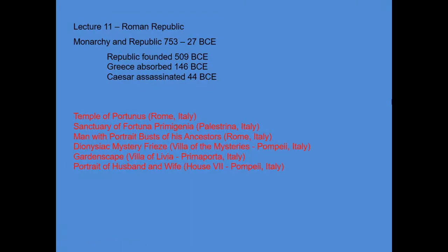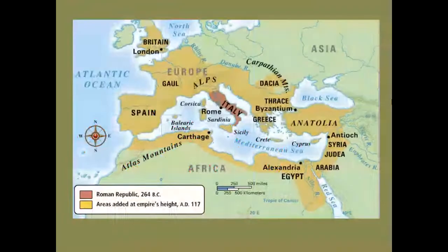Hello everybody, welcome to the first lecture in our third unit. We're starting off with the Roman Republic — the early days of the history of Rome. We've already looked at the work of the Etruscans, the original kings of the city-state of Rome, and we're now moving into the era of the development of the early phase of Roman culture.